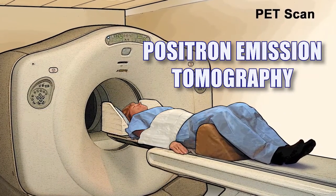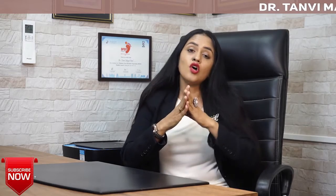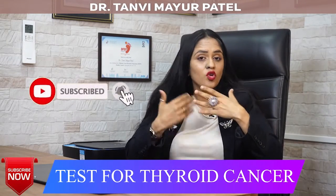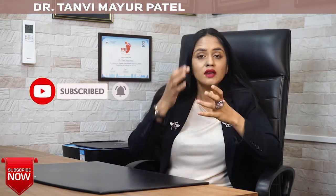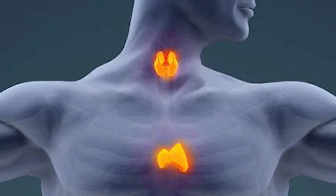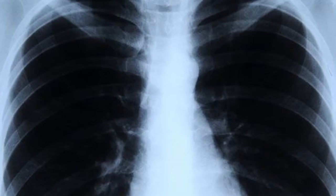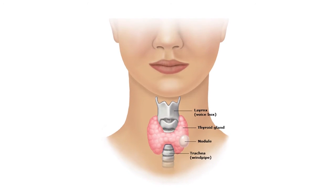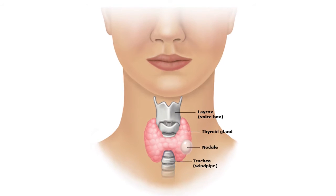Besides the PET scan, we also do CT scan and MRI scan of your neck area, and sometimes of the chest area, to find out whether thyroid cancer is present and whether it has spread to the chest area or not. For that we also sometimes do a chest X-ray to find out the spread of cancer in the chest area.